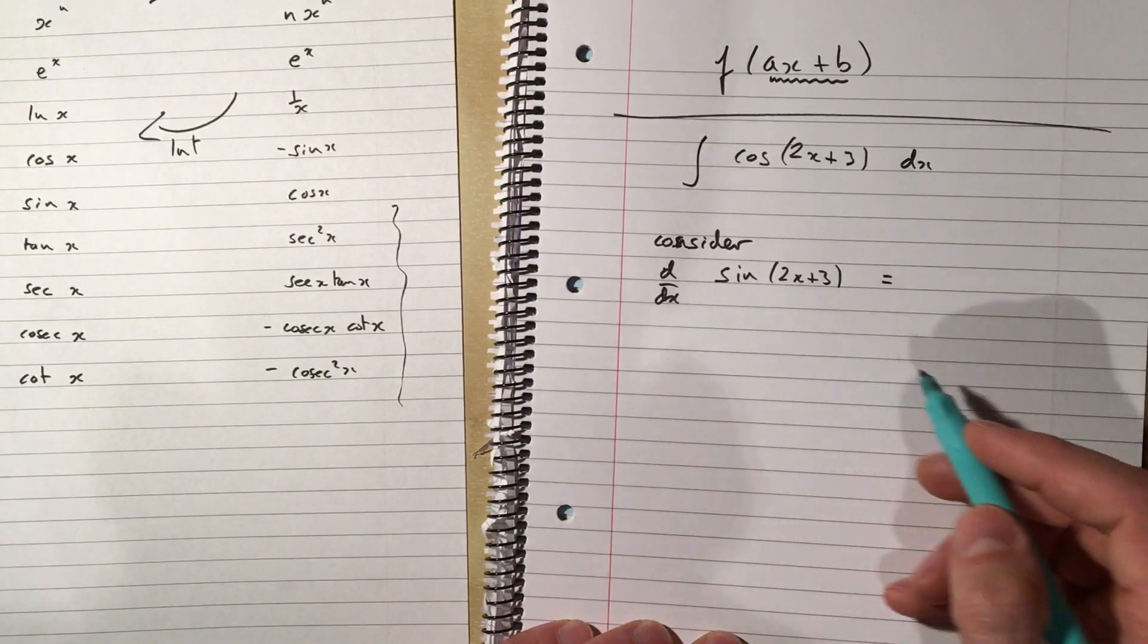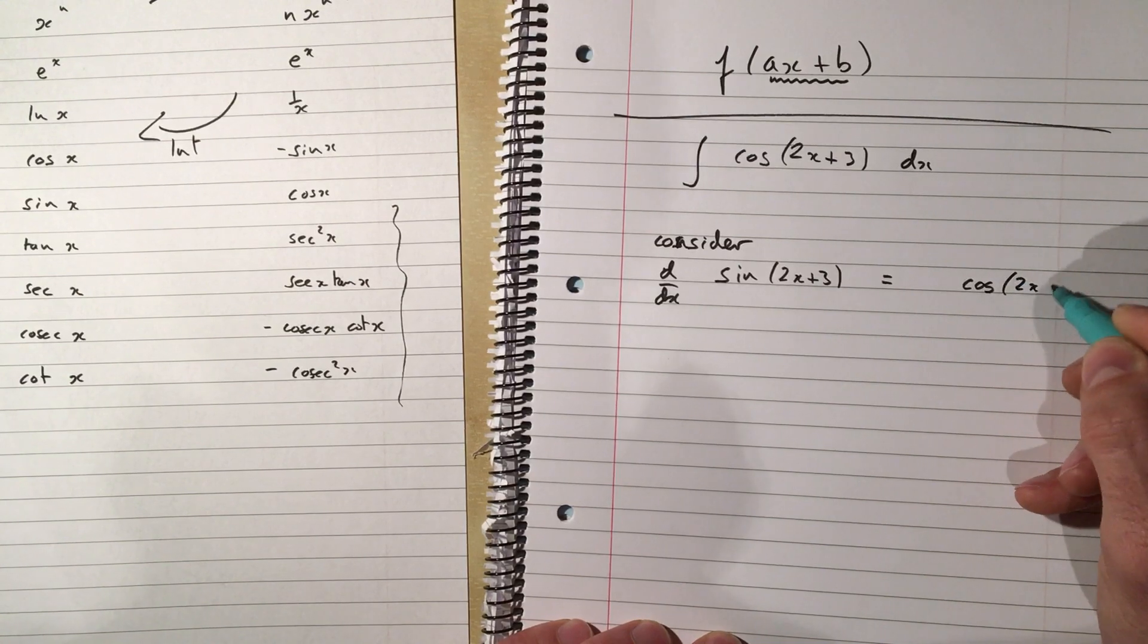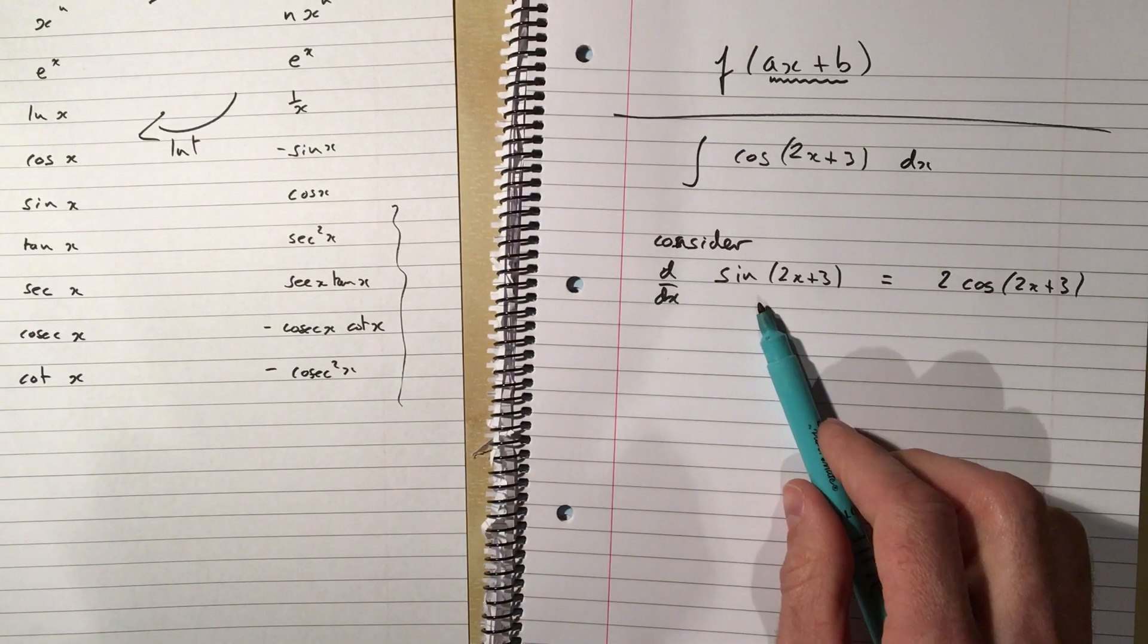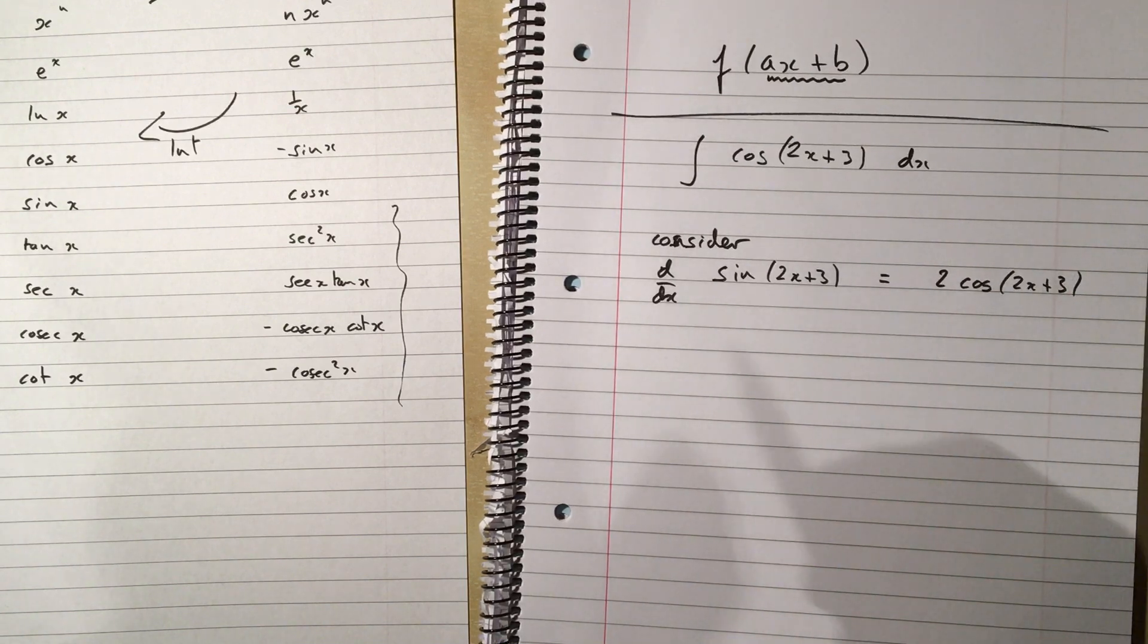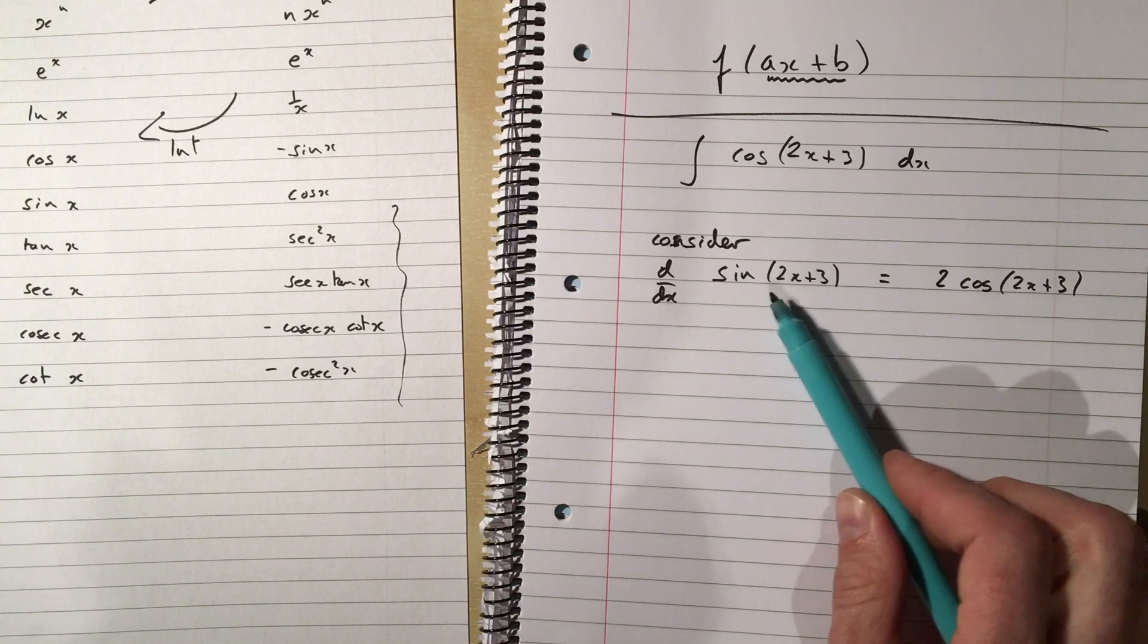Well the derivative of sine of 2x plus 3 is cos of 2x plus 3 times 2. Now, if you're not happy with why that is, go back and practice chapter 9. This is a chain rule question, we need to be able to do those smoothly.